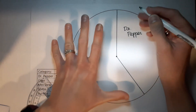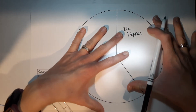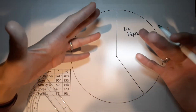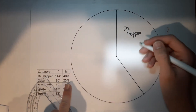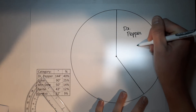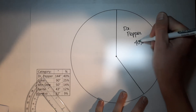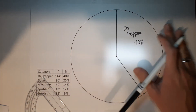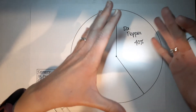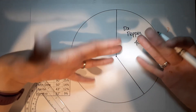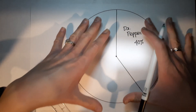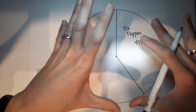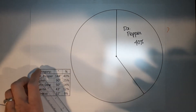Your teacher may specify how they want slices labeled — they might want the percentage or the degrees listed. I personally am going to put the percentage, so Dr Pepper is labeled 40%. There's no hard and fast rule; just make sure it gives enough information.